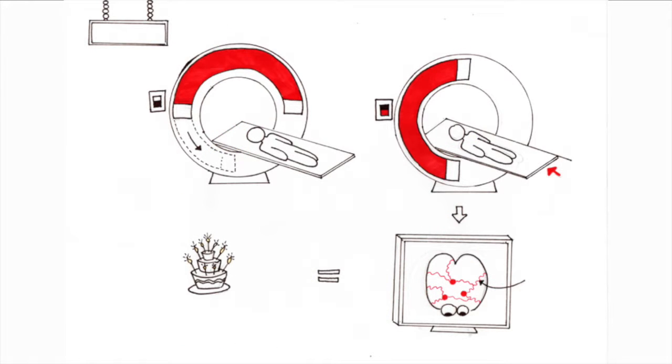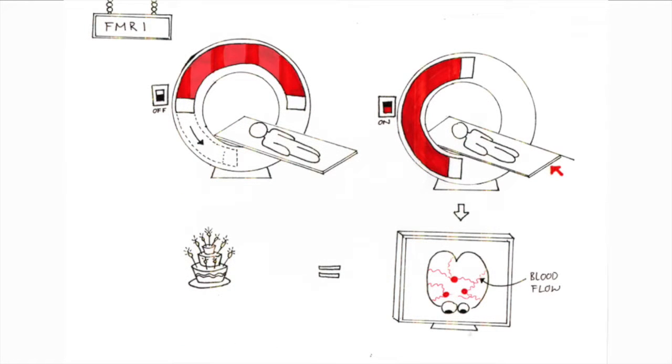To understand this, we have to go to functional magnetic resonance imaging, or fMRI studies. These studies use pictures to determine which part of the brain receives the most blood flow when we look at a palatable food.